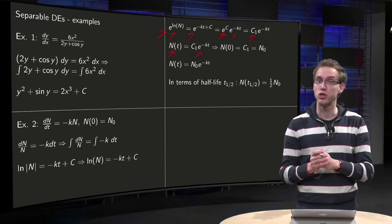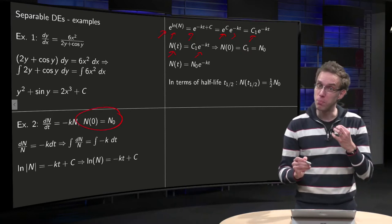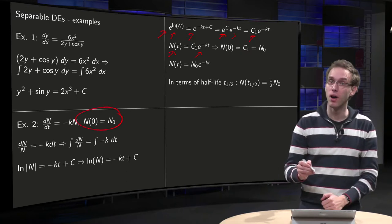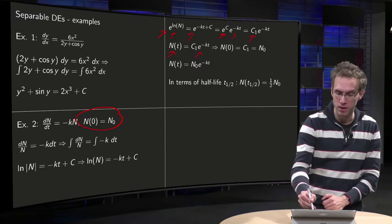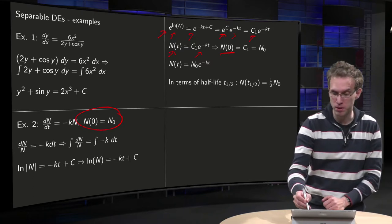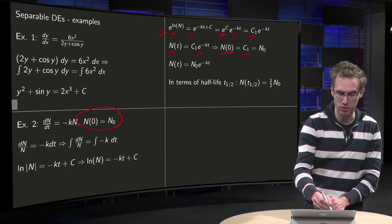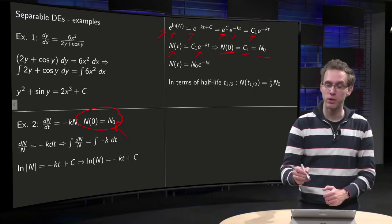Now, how can we find our c1? Well, we also have this initial condition, so we plug in t equals 0 on the left-hand side and on the right-hand side. So we get n of 0, and c1 times e to the power minus kt becomes c1, and it has to be equal to this n0, our initial quantity.